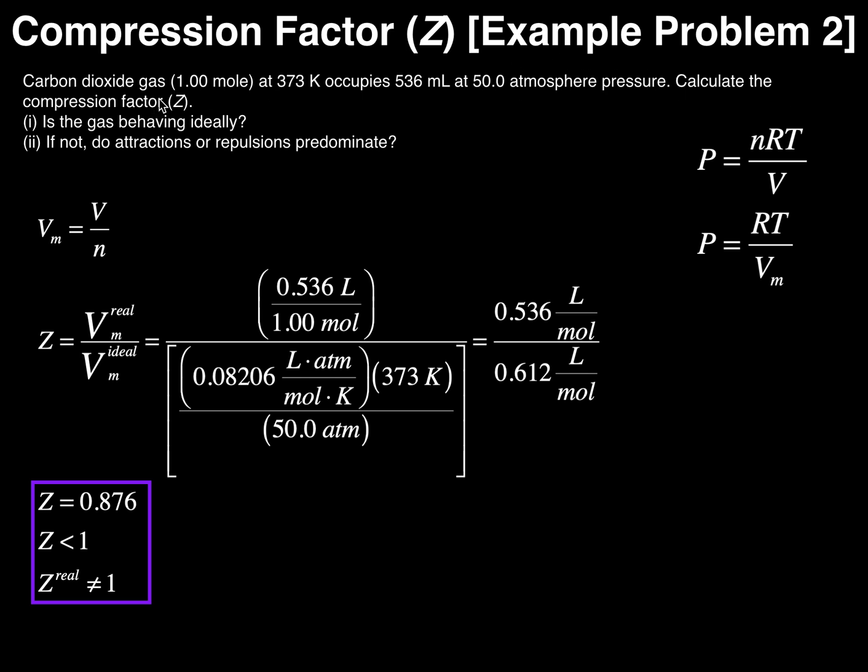Calculate the compression factor Z. From this calculation we can determine two things: first, is the gas behaving ideally, and second, if not, do attractions or repulsions predominate in the gas? This would be the case if this turned out to be a real gas, in other words, a gas behaving non-ideally.